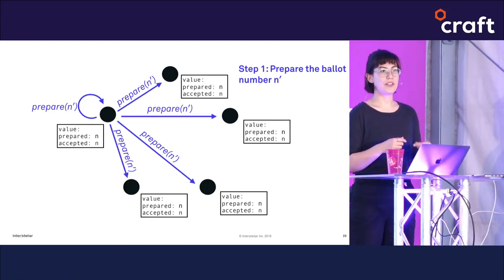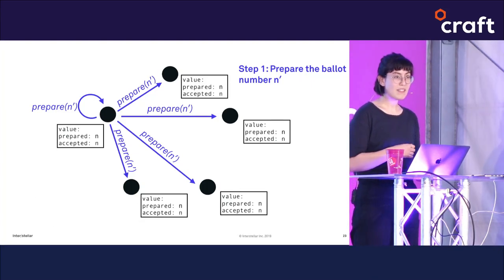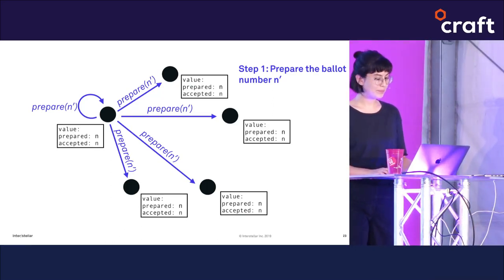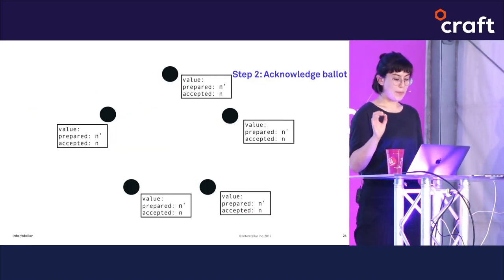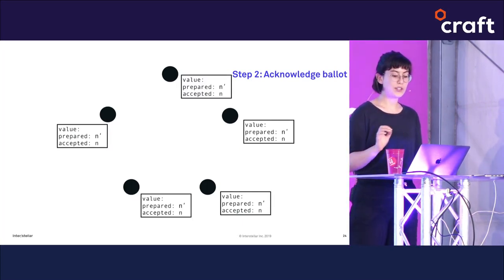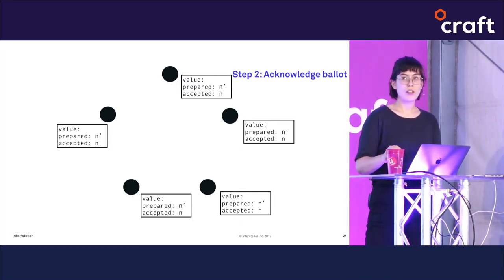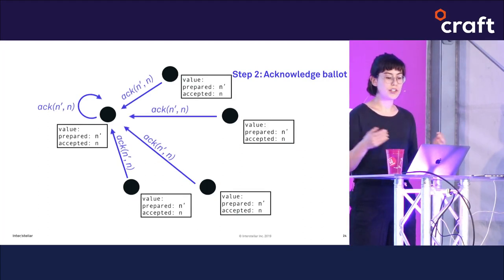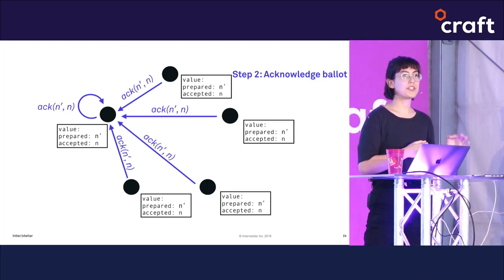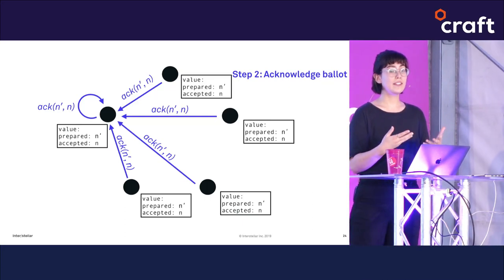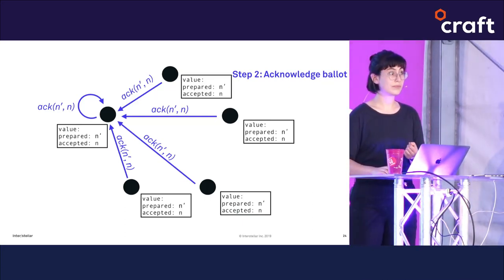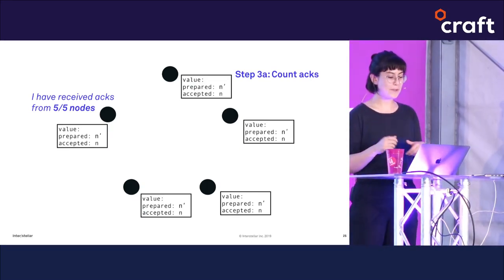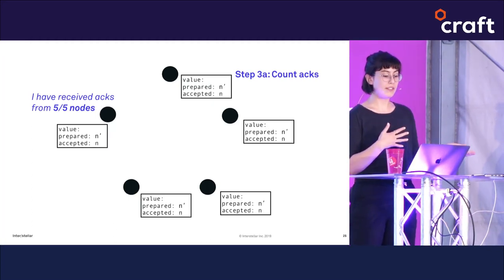You can think of this prepare message as a warning that change is coming. When nodes receive this prepare statement, they check it against the largest ballot number they've previously prepared. Since n-prime is greater than n, they will acknowledge the ballot — they're telling the proposer they've never prepared a later ballot, so it's okay to proceed. The proposing node then counts the number of acknowledgments received.